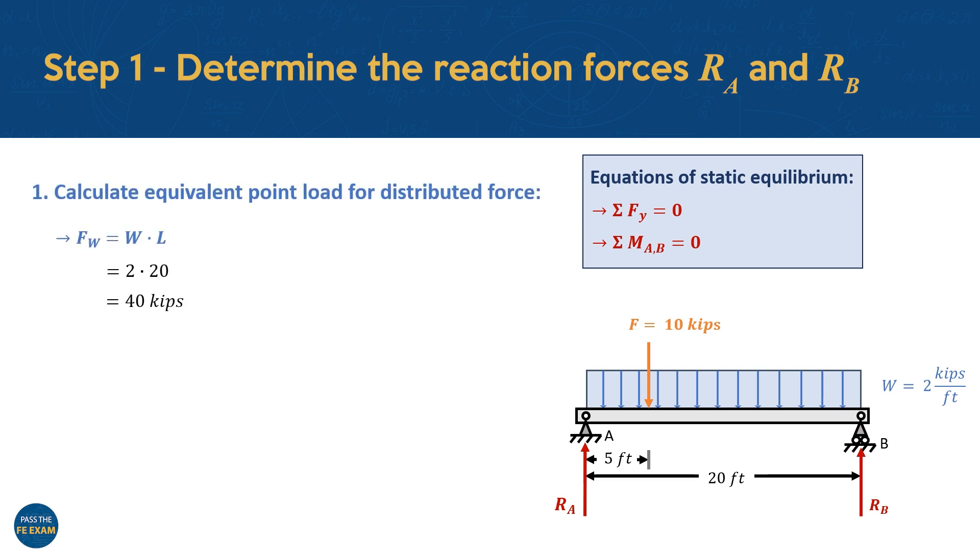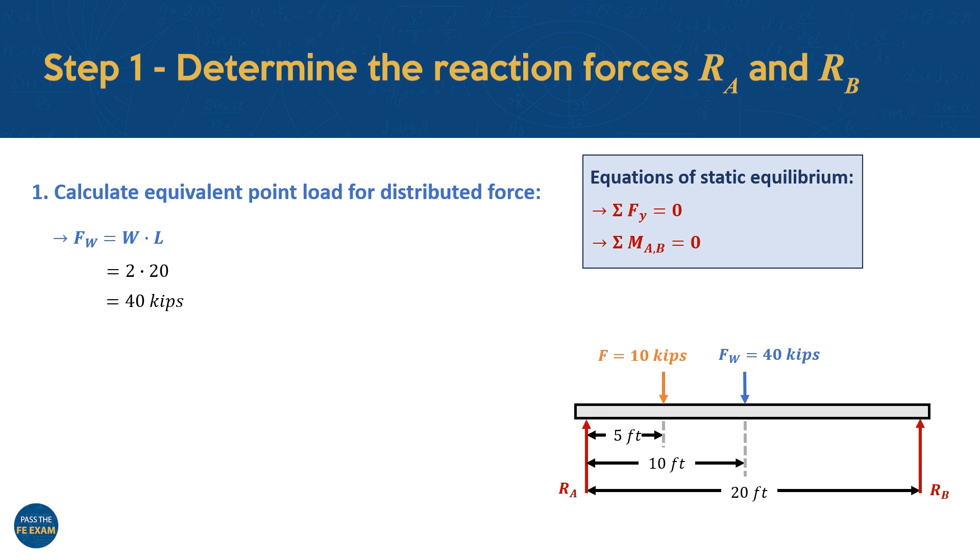To apply these equations, we first need to determine an equivalent force for the distributed load W. The total load intensity is found by multiplying the given uniform load intensity, two kips per feet, by the beam's length of 20 feet, resulting in an equivalent load of 40 kips. This means that the distributed loading can be replaced by a single concentrated force of 40 kips, acting at the centroid of the distribution, which in this case is the midpoint of the beam. We go ahead and replace this loading in our diagram. And with this equivalent load known, we can now calculate the reactions at the supports RA and RB.